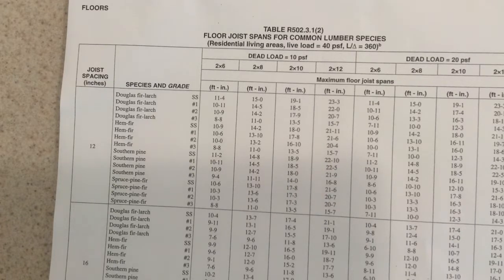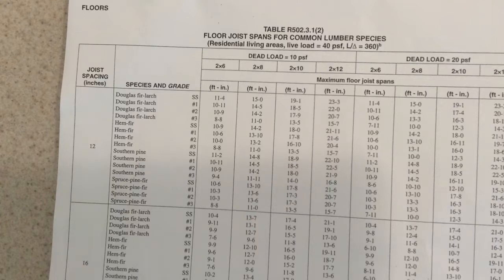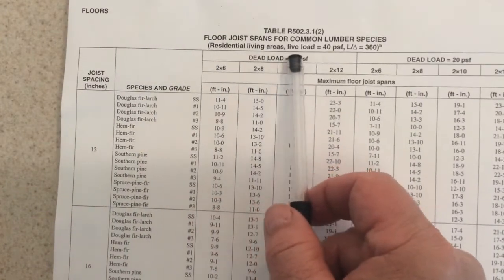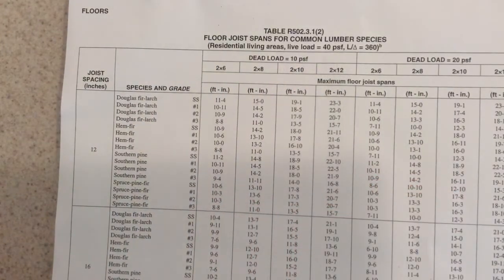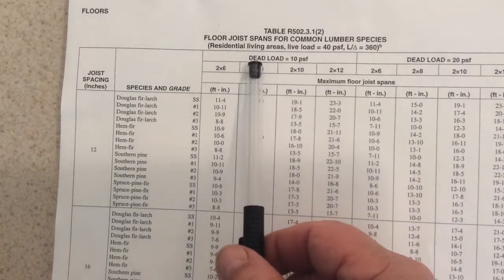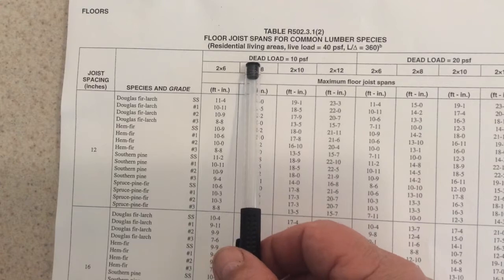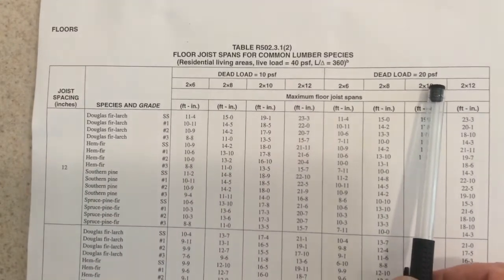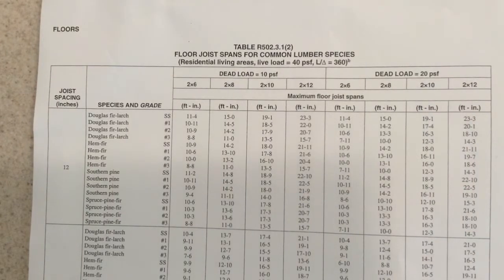We need to understand what this chart talks about. The first thing we notice is that it says residential living areas — live load equals 40 pounds per square foot. Then we have a couple of spots where we see dead load 10 pounds per square foot and dead load 20 pounds per square foot.